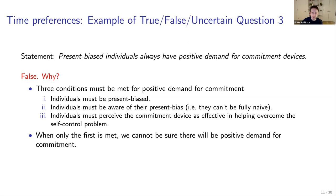There are three conditions that must all be met for positive demand for commitment. First, the person must be present biased. Second, individuals must be aware of the present bias — they can't be fully naive (they could be partially naive). Third, the individual must perceive the commitment device as effective. If someone perceives the device as useless, there will be no demand for commitment.